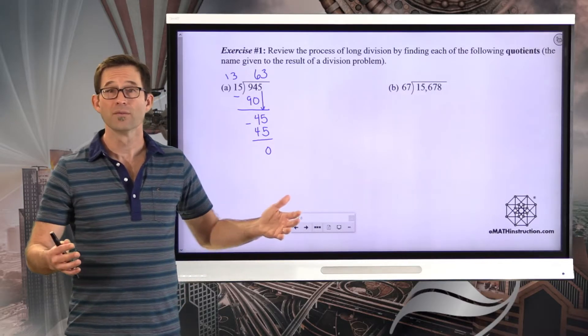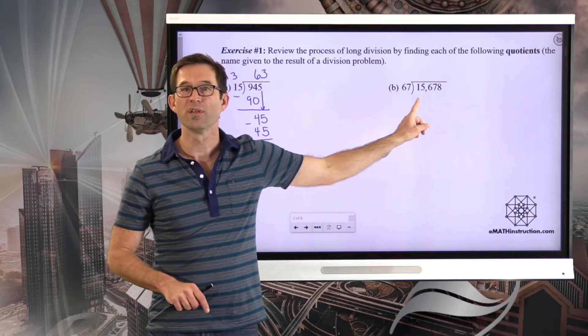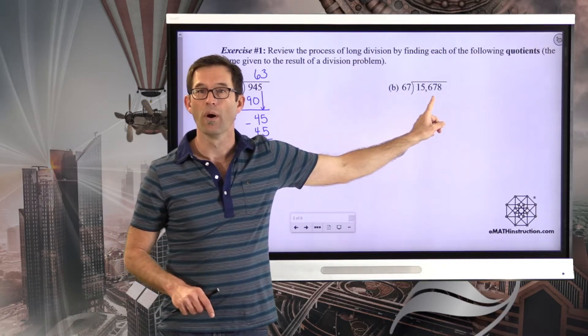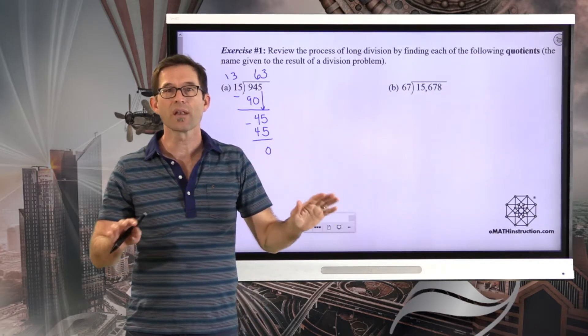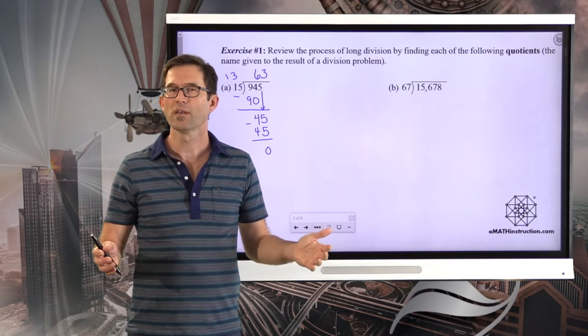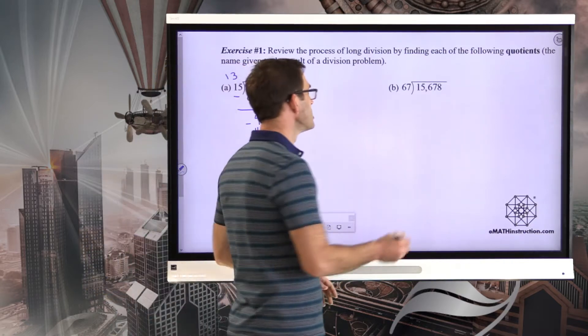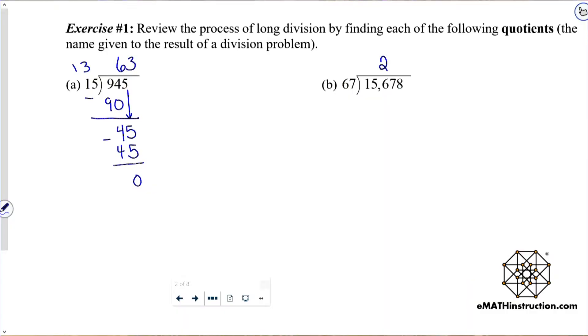All right, let's go through it again. I'm thinking about how many times 67 goes into 15. No good there. How many times 67 goes into 156? Well, 67 is kind of close to 70. 70 times two is 140, whereas 70 times three would be 210. So I'm going to go with the two. I'm using a little bit of estimation there. Two times 67 is 134. I subtract and find 22. I drop my seven down.